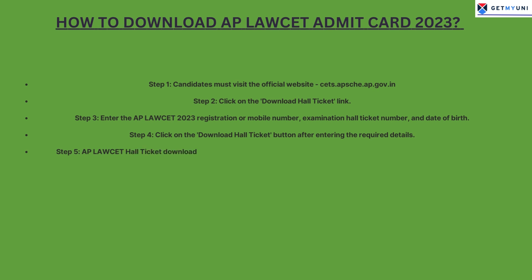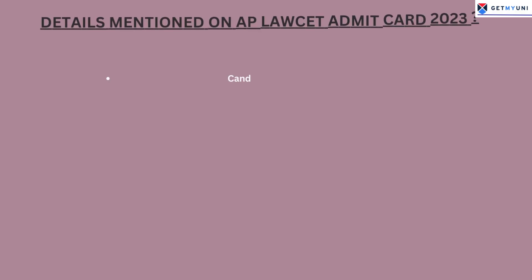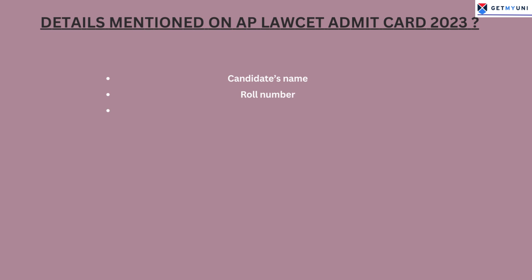Step 5: The AP Lawsett Hall Ticket download will be completed and candidates can take a printout of the hall ticket for future reference. Candidates must verify the details mentioned on the admit card properly and contact the conducting body if any errors are found.